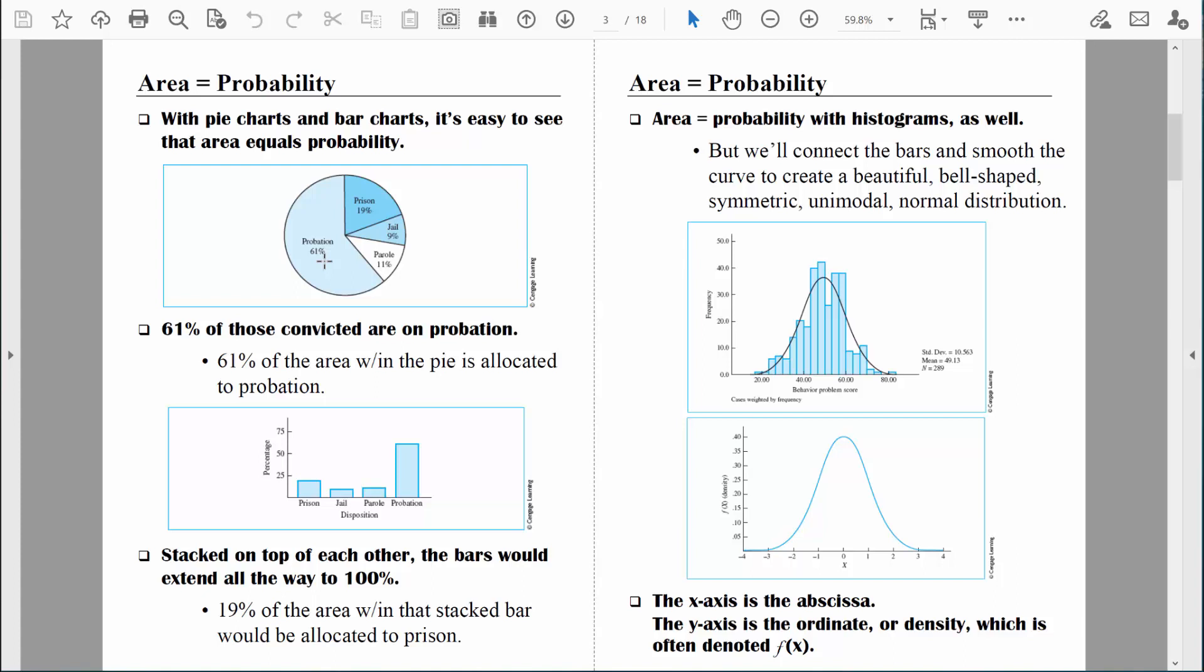When I say that area equals probability, this slice of the pie right here represents 61% of the total pie. The proportion of people on probation is equivalent to the area of that slice of the pie. 19% of the people convicted of a crime are in prison. Well, how hungry are you? Can you eat 19% of the pie? Because that's how big that slice is right there.